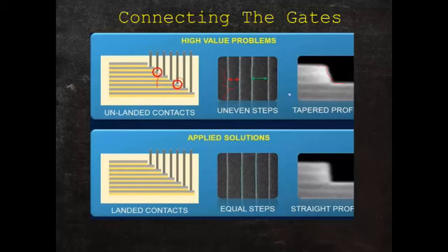Applied Materials is a company that has plasma etching devices that they've employed to really straighten this up to get equal steps and to give you much cleaner edges on your stair-steps, making it easier to land the connections as you go forward.